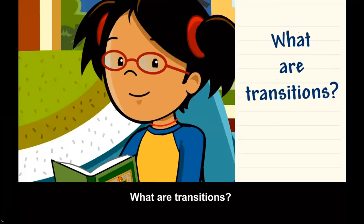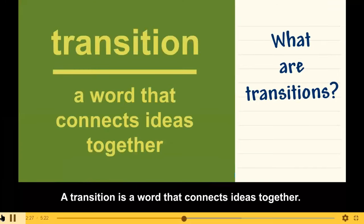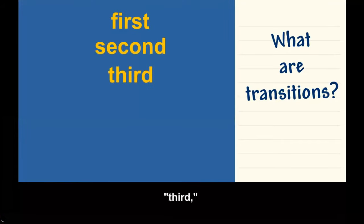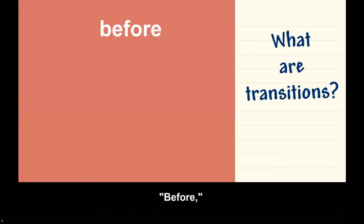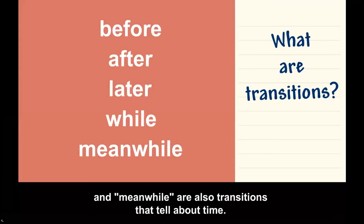Transitions can tell you about the sequence of events. What are transitions? A transition is a word that connects ideas together. First, second, third, then, next, and finally are all transitions that describe the order of events. Before, after, later, while, and meanwhile are also transitions that tell about time.